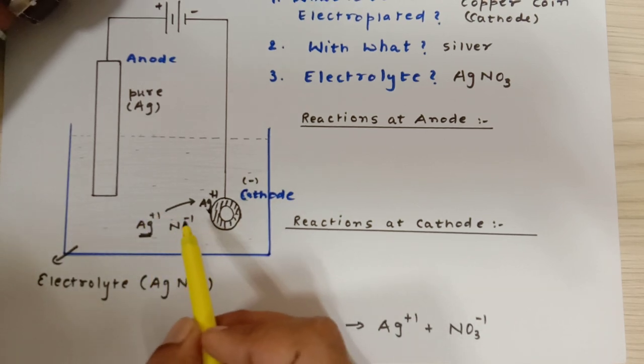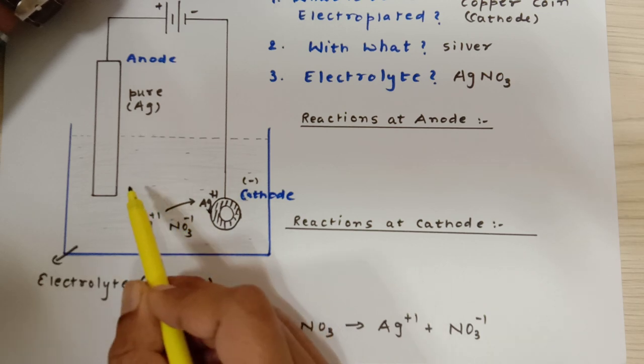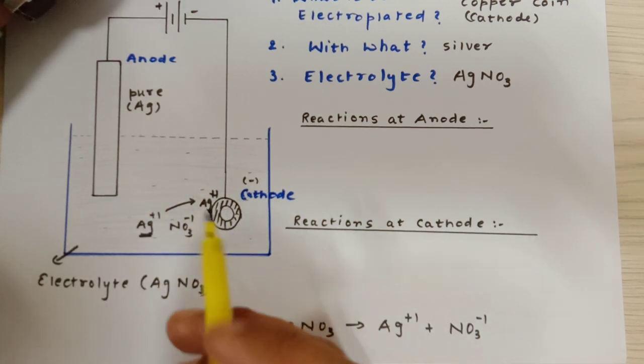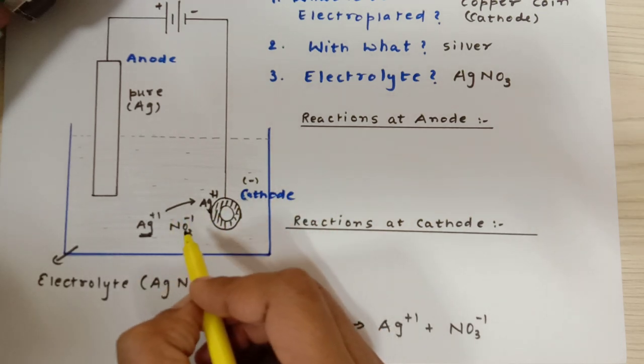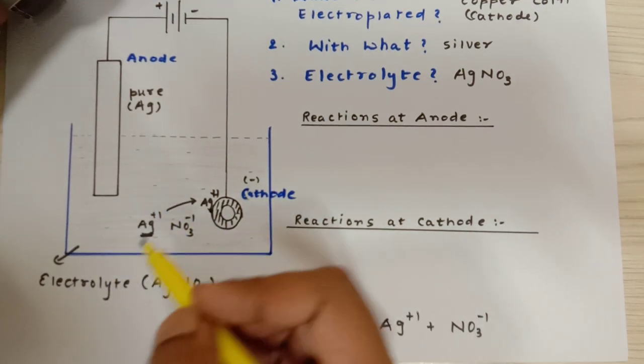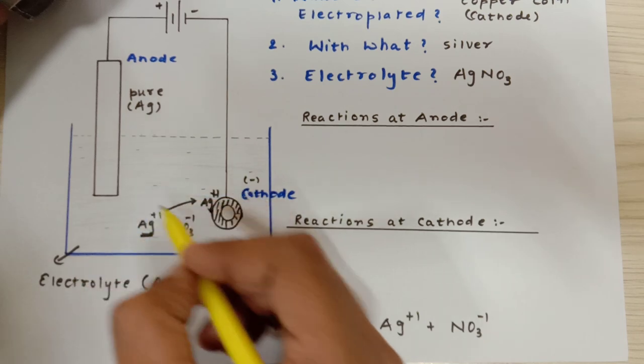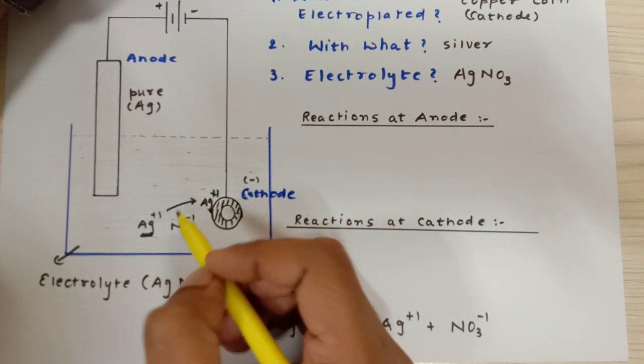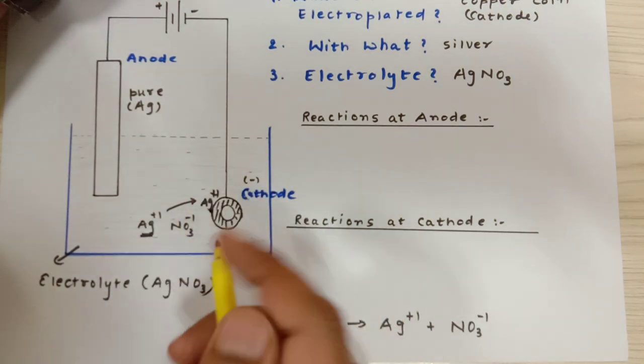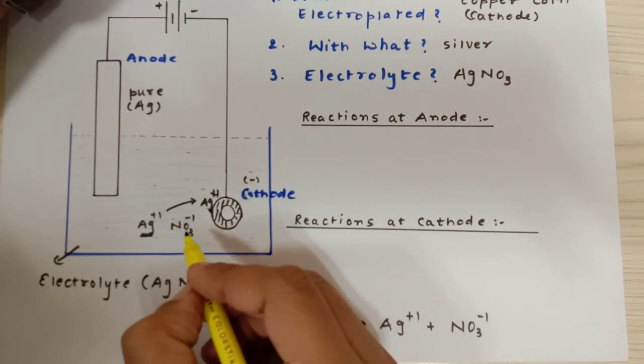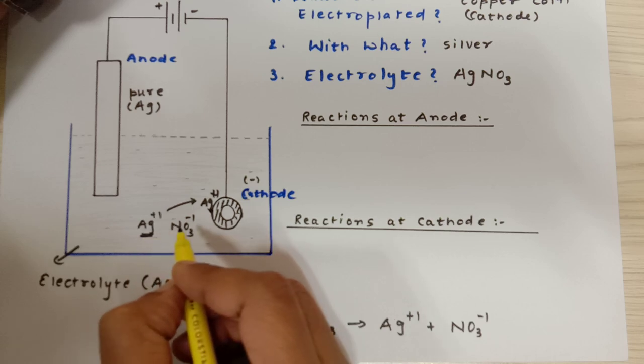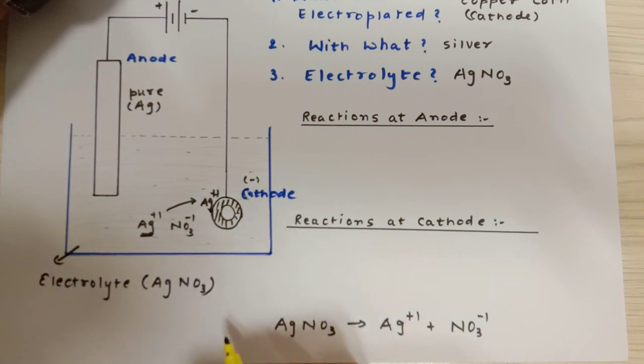Since NO3 is a heavier ion, it can't go towards the anode with that much faster speed. I am going to consider this as a heavy ion and it does not move towards the cathode. Ideally it should, because it is a negative ion it should be getting attracted towards the anode positive, but since this is a heavy negative ion, I am going to keep it over here.